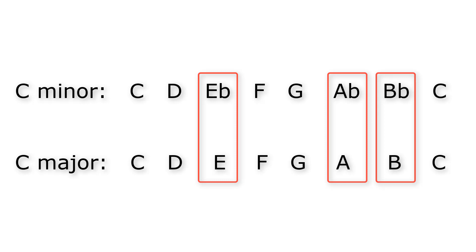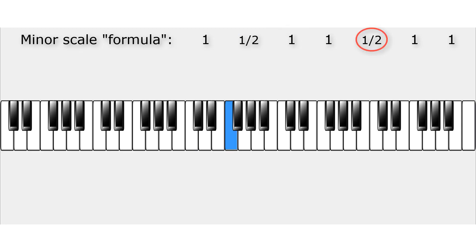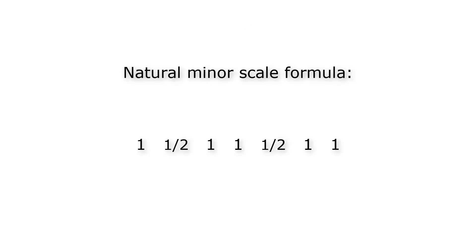Let's do one more natural minor scale: B-flat minor. We start on B-flat, go up a whole tone to C, a halftone to D-flat, a whole tone to E-flat, again a whole tone to F, a halftone to G-flat, a whole tone to A-flat, and finally a whole tone to B-flat. This is the B-flat natural minor scale. Of course, if you want to find any other natural minor scale starting on a white or black key, just apply the natural minor formula: one, a half, one, one, a half, one, one.